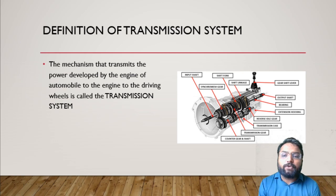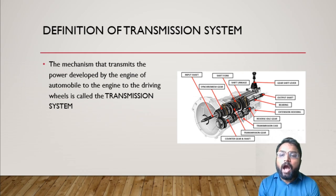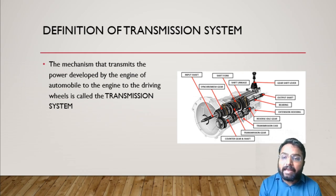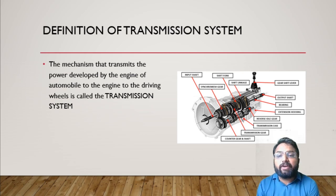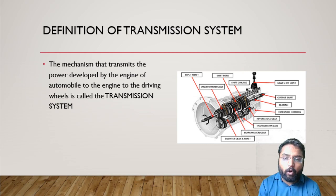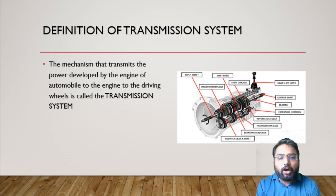Now let's talk about types of gears used in this kind of gearbox. Mainly we are going to use helical types of gears, which can provide higher torque and at the same time higher speed. So it will have a combination of helical gears which can be connected or controlled manually.